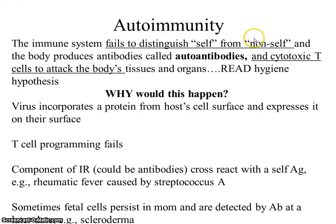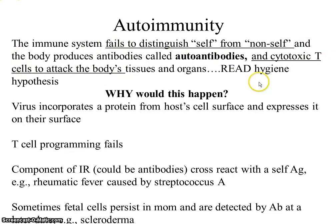Autoimmunity is another problem with our immune response - we don't distinguish self from non-self. It can be a failure in maturation, though we probably killed those cells. What happens to cause T and B cells to forget or mistake self and non-self? B cells produce autoantibodies and cytotoxic T cells attack the body's own tissues and organs. One cause is that a virus could incorporate a protein from the host cell surface - your own proteins - and display them on the virus's surface.